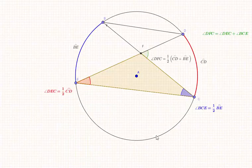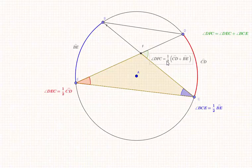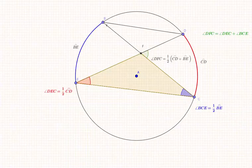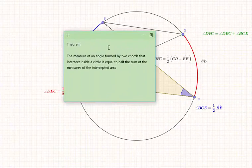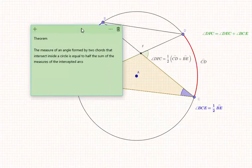We know that, and we apply these. We just plug in and we get DFC is equal to half of CD plus BE. Now we can come back to our theorem.